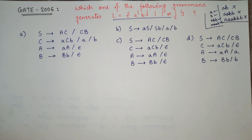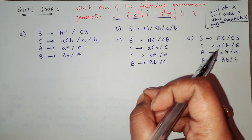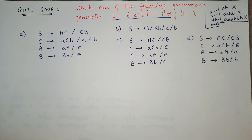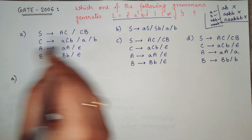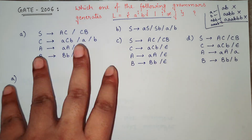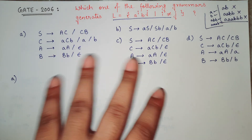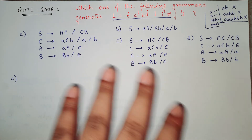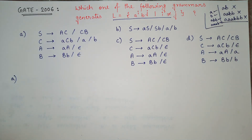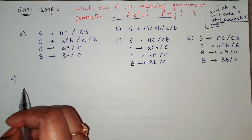So we will take the grammars one by one and check which grammar satisfies this condition. We are not going to take every production and check, because that would take too much time. Instead, we will take one production at a time and see if we are getting our answer from that.